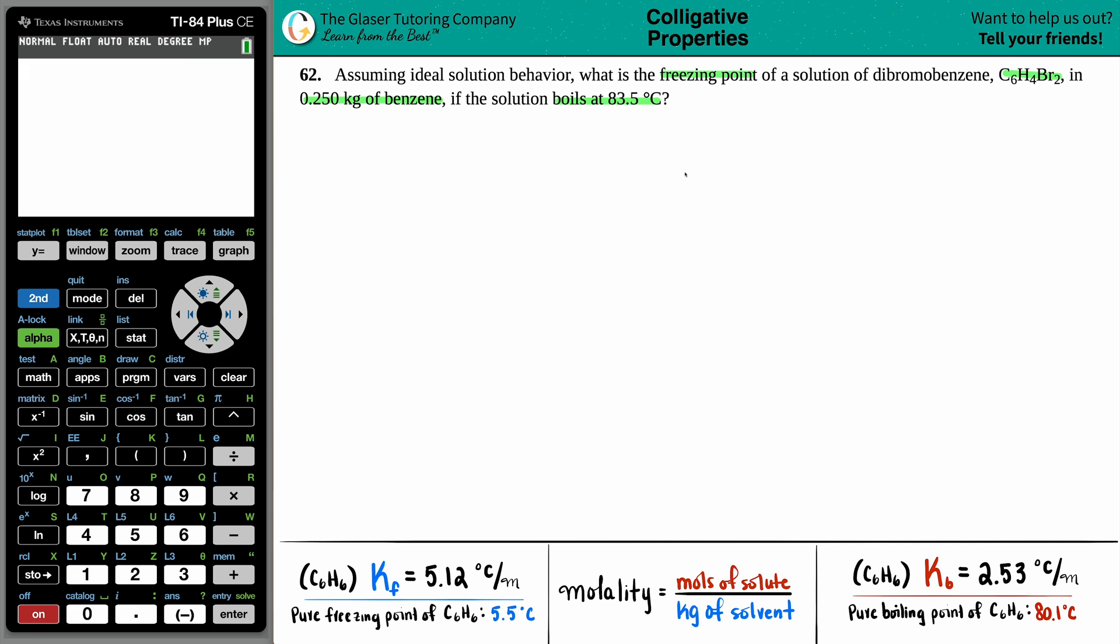Alright, so we're looking for the freezing point. We have dibromobenzene, which is C6H4Br2, being placed into benzene. By the wording here, a solute always gets placed into a solvent. So in this case, the C6H4Br2 is the solute, and the benzene is going to be the solvent.